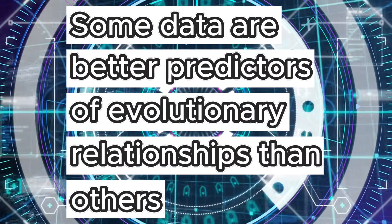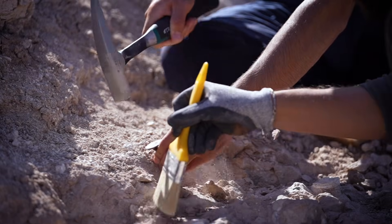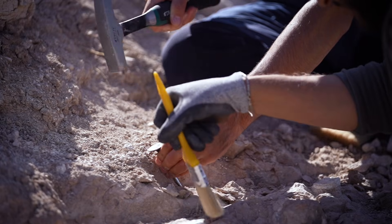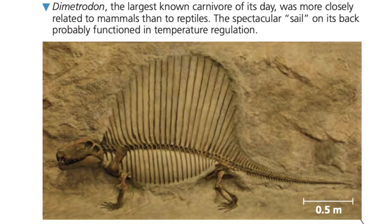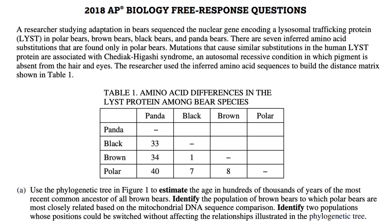Number three: some data are better predictors of evolutionary relationships than others. This one comes up often on the exam. Evolutionary biology is a difficult subject because the data is scarce and we can't always know exactly what happened in the past. Scientists try to use as much data as possible to make predictions about past evolutionary relationships, and in doing so, we can deal with lots of different types of data — sometimes morphological data like skeletons or fossils, behavioral data like bird songs, or molecular data, both DNA and proteins.